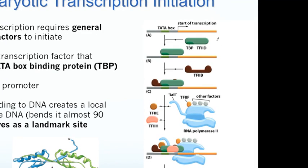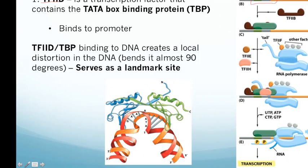The first transcription factor to know is TF2D, which contains a protein called TBP — Tata Box Binding Protein. TBP binds to the TATA box and positions TF2D on the promoter region. This is illustrated in a figure showing what the DNA looks like when TF2D and TATA Box Binding Protein are bound to the promoter.